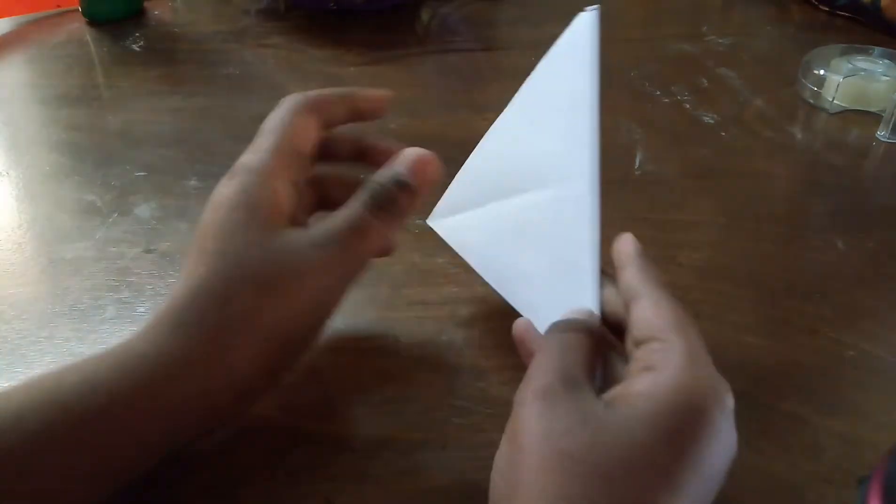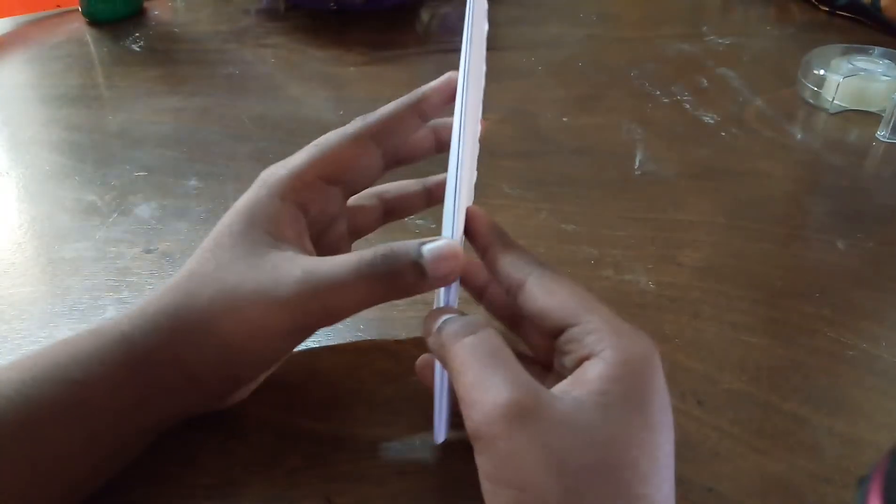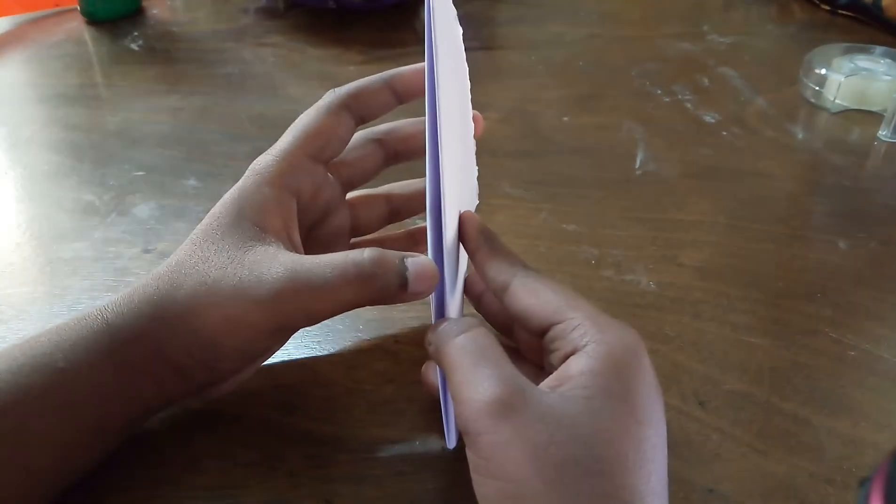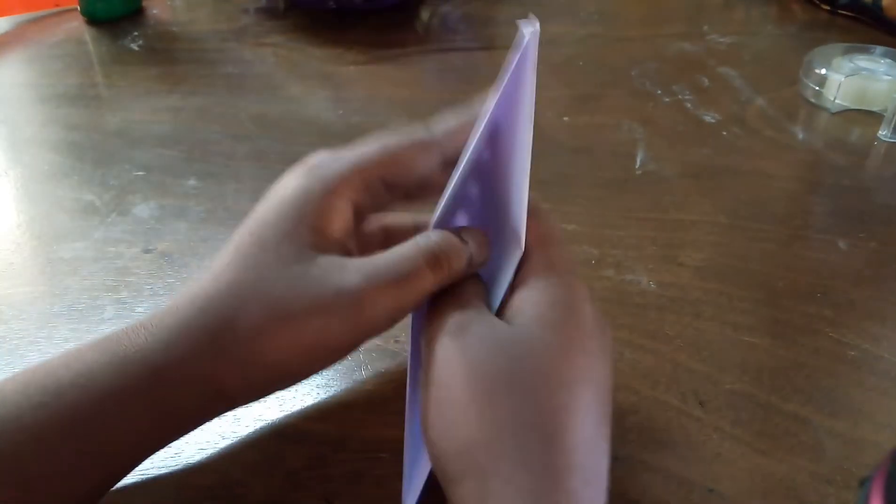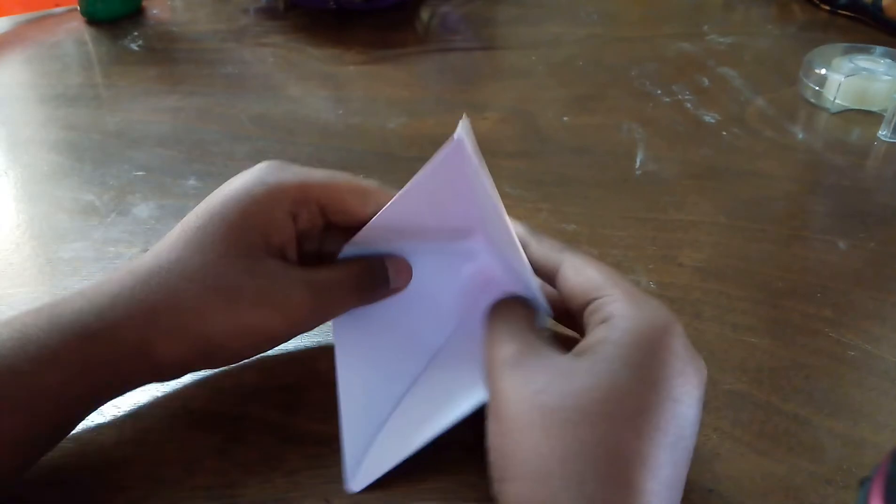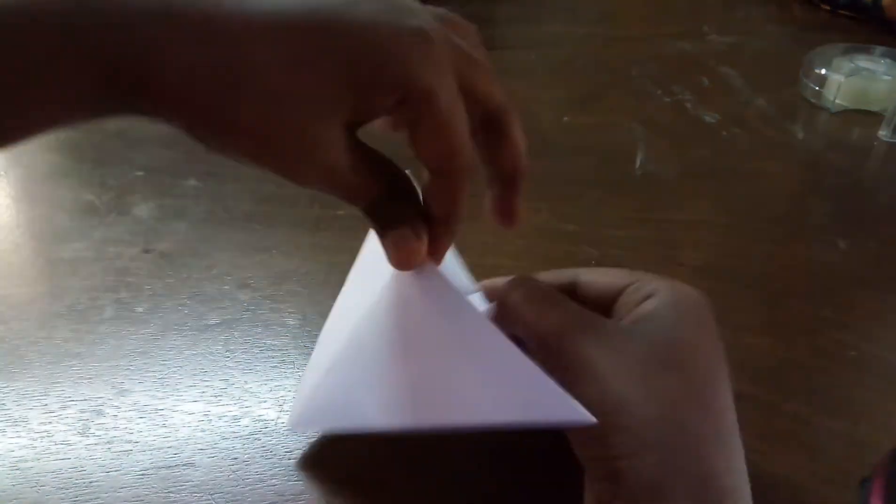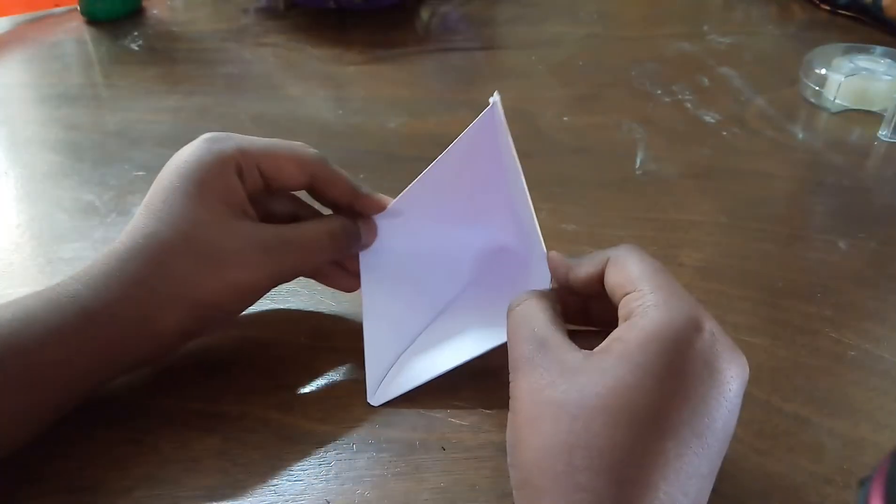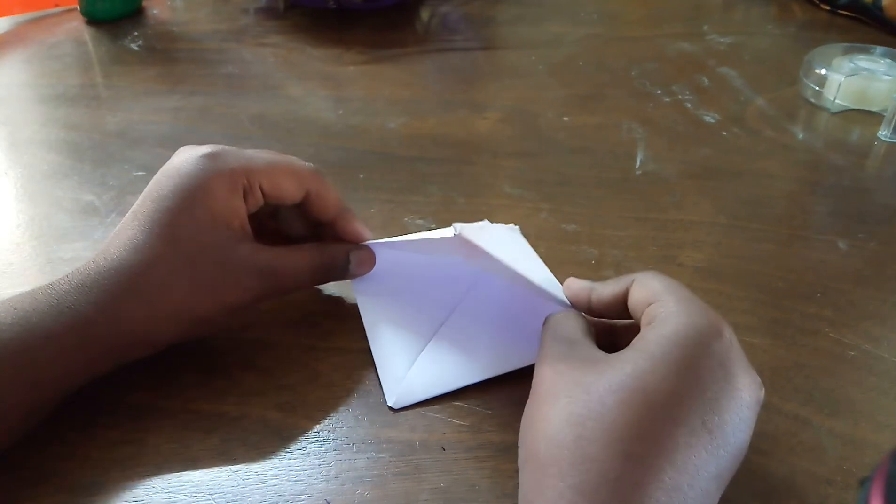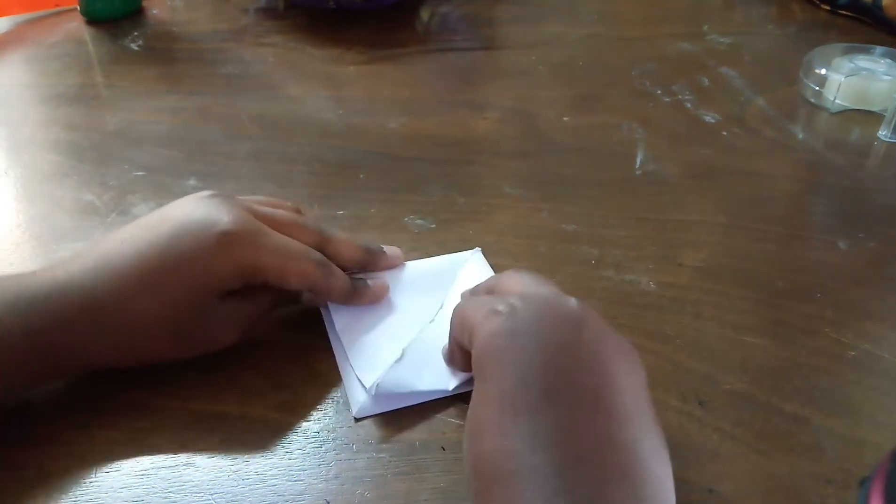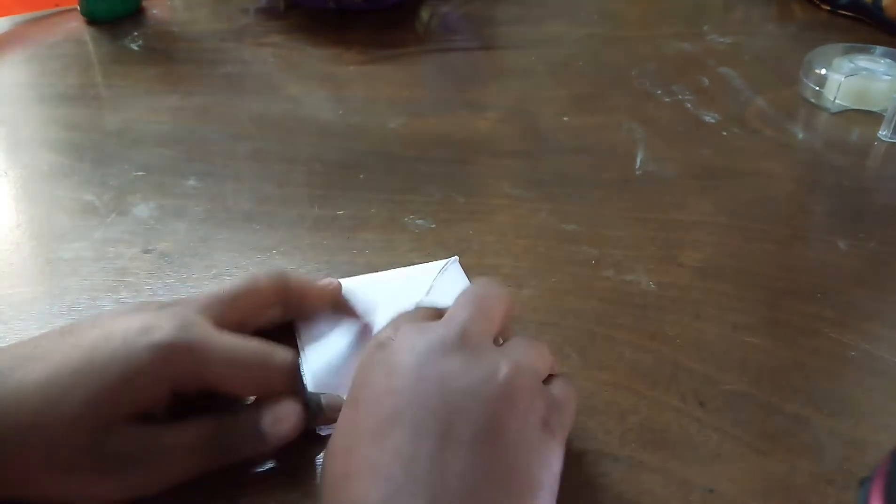When you are done with that, you are going to get a triangle shape. Now this is the tricky part. What you are going to do is open this up, just like so. It is going to be like a pocket. Open this pocket. This looks like a boat but it is not. Pull these two sides really far so that this becomes a diamond shape.